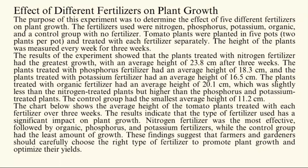The control group had the smallest average height of 11.2 centimeters. The chart below shows the average height of the tomato plants treated with each fertilizer over three weeks. The results indicate that the type of fertilizer used has a significant impact on plant growth. Nitrogen fertilizer was the most effective, followed by organic, phosphorus, and potassium, while the control group had the least growth. These findings suggest farmers and gardeners should carefully choose the right fertilizer to promote plant growth and optimize yields.